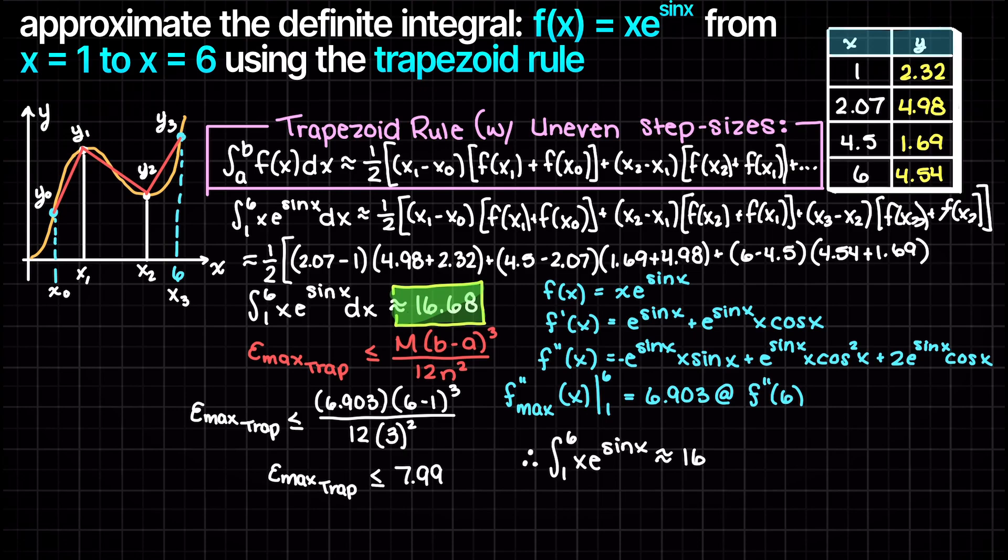Therefore we can say that the approximate definite integral of xe to the power of sine x between the bounds of 1 and 6 is 16.68. This is very likely insufficient for your applications as our error is huge and we would simply repeat the process with more trapezoids to get a better approximation.